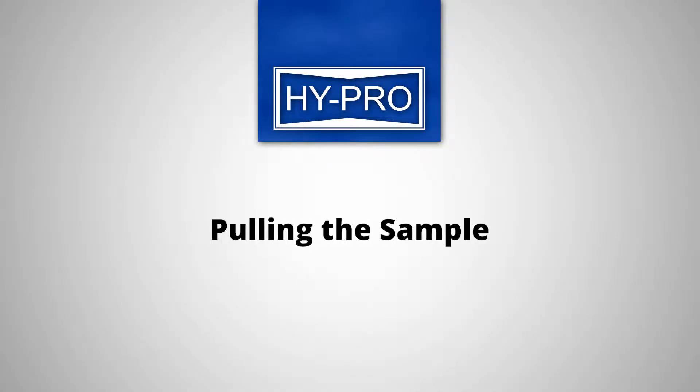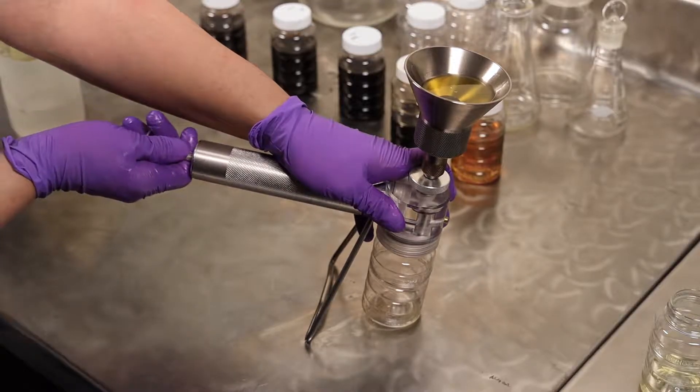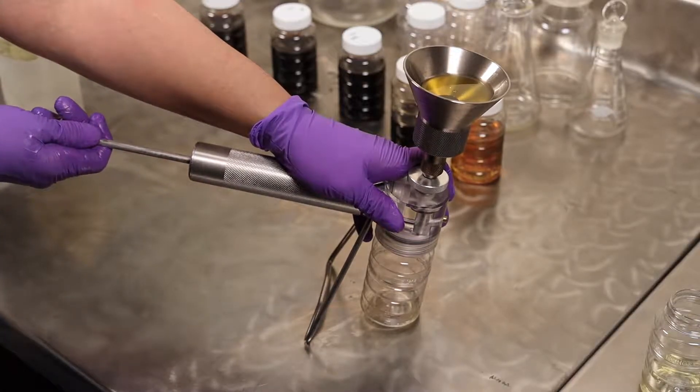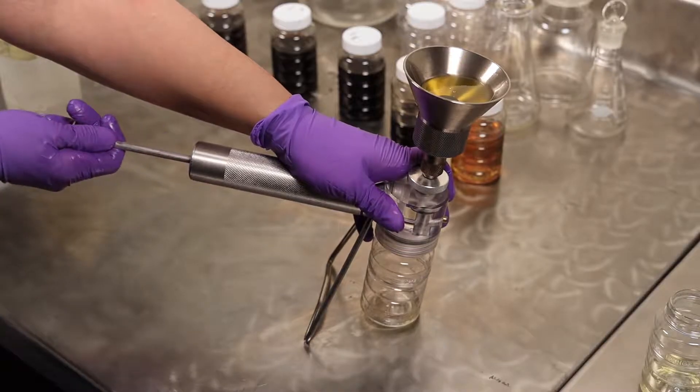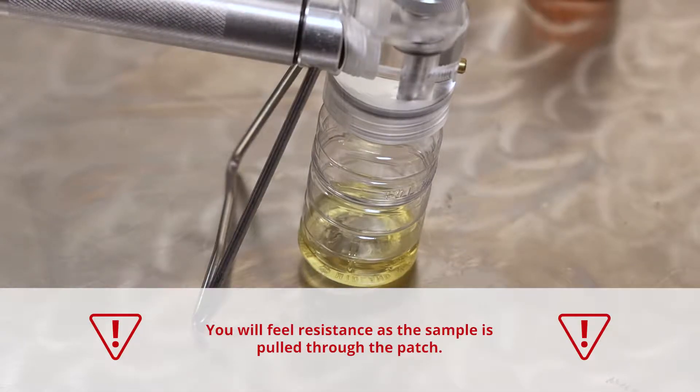Pulling the sample. Grasping the vacuum pump firmly, pull the handle slowly to the rear. This process may have to be repeated due to the viscosity of the sample. Note that you will feel resistance as the sample is pulled through the patch.